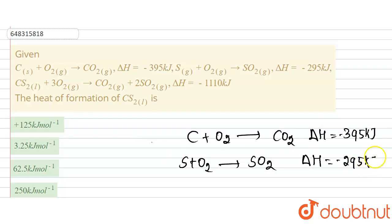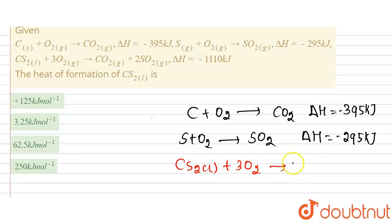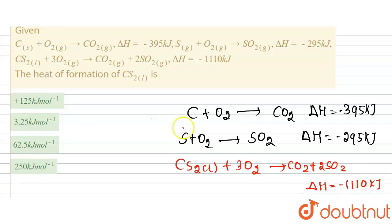Reaction three: CS₂ in liquid form combined with 3O₂ gives CO₂ plus 2SO₂, with ΔH = −1111 kJ. We have to calculate the heat of formation of CS₂ in liquid form.